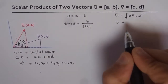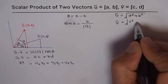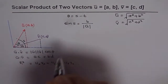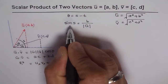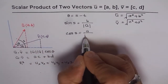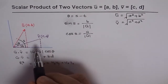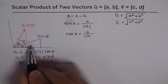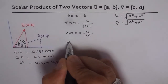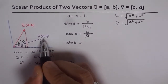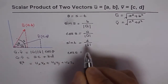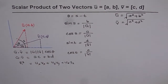Similarly, the magnitude of V equals the square root of C squared plus D squared. For vector V, the angle T it makes with the X axis gives us: sin(T) = D over the magnitude of V, and cos(T) = C over the magnitude of V.